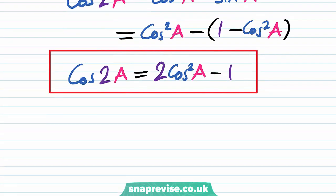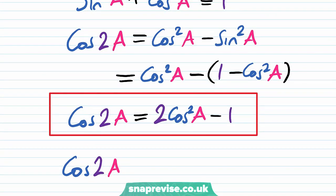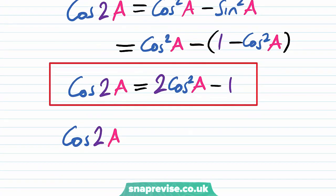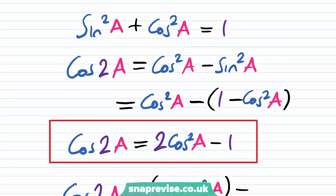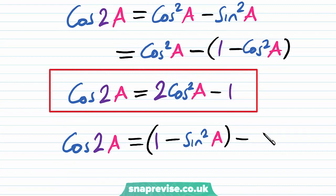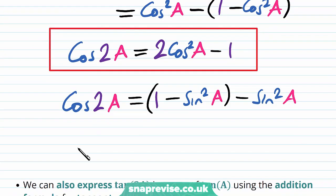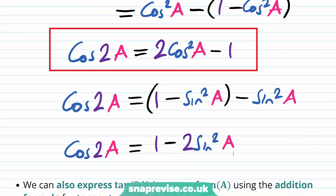Similarly, if we want cos of 2a only in terms of sin of a, we replace cos squared of a with 1 minus sin squared of a. So our formula becomes 1 minus sin squared of a minus a further sin squared of a, and therefore we get that cos of 2a is equal to 1 minus 2 sin squared of a.